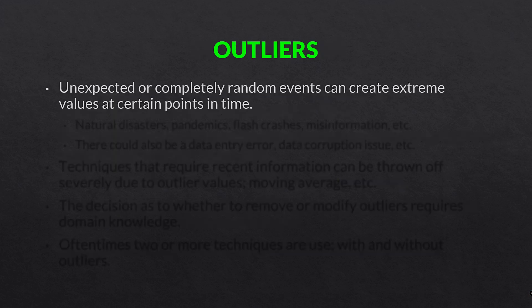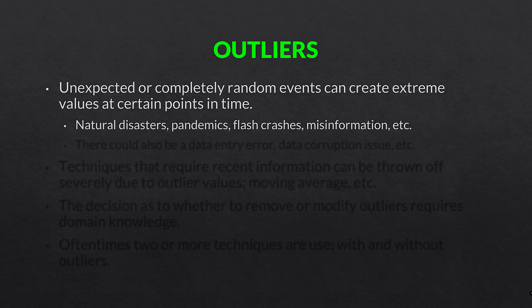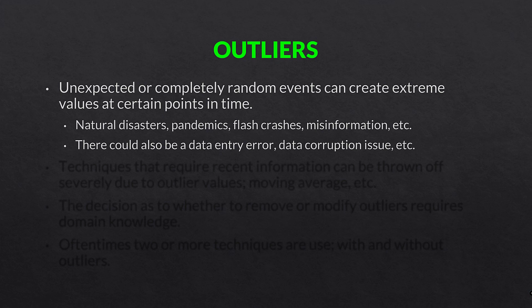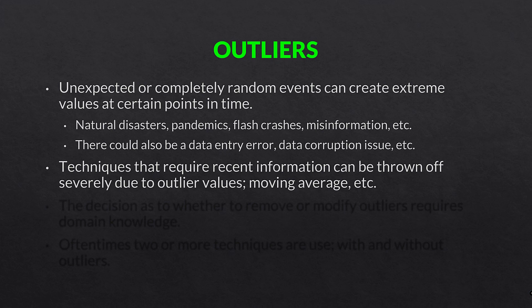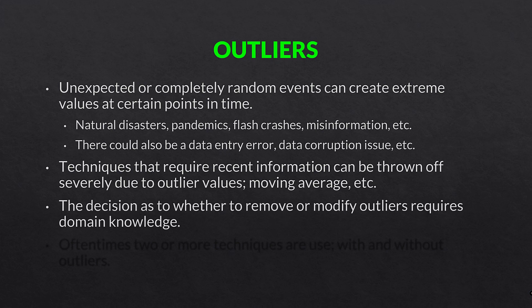Outliers. Unexpected or completely random events can create extreme values at certain points in time — natural disasters, pandemics, flash crashes in stock markets, misinformation, data entry errors, data corruption issues, and so on. Techniques that require recent information can be thrown off severely due to outlier values, such as moving averages. If you get an extreme value on a three-day moving average, that can create havoc. A longer moving average of five, ten, or more days may not be as greatly affected. So keep in mind the effect of outliers on the technique you are using.